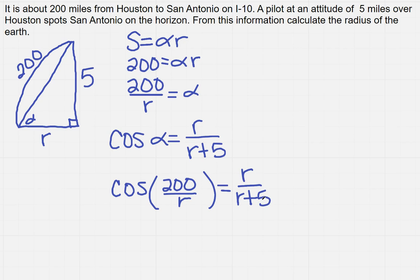So we know we're doing well here because look, everything has R's in it. Now, I can actually get everything on one side. So if I subtract the R over R plus 5, I'm going to get the cosine of 200 over R minus R over R plus 5, and that equals 0.